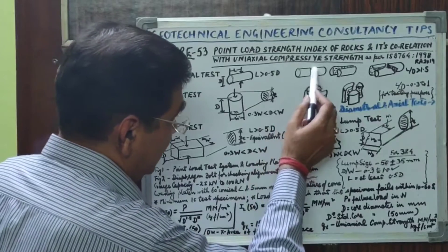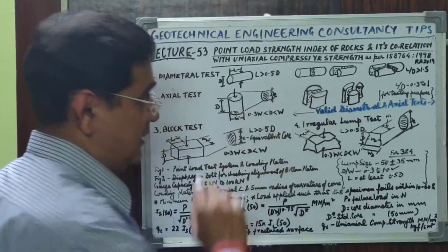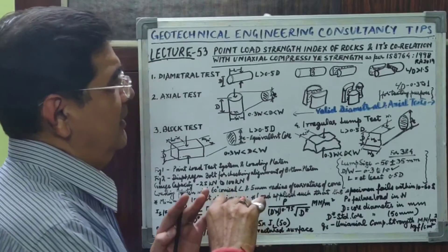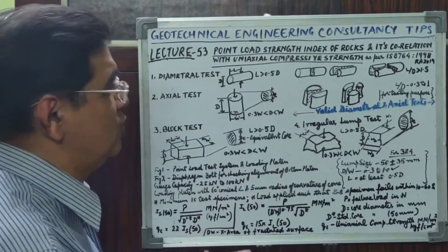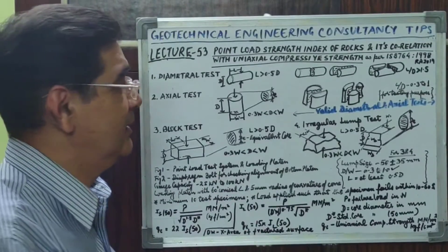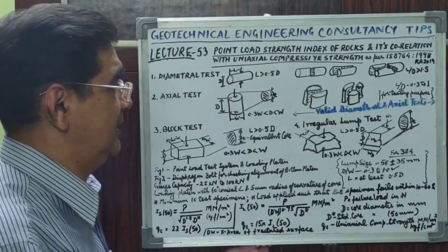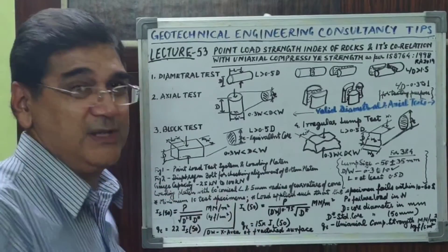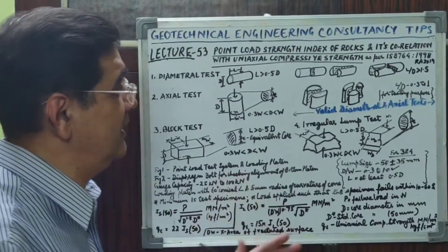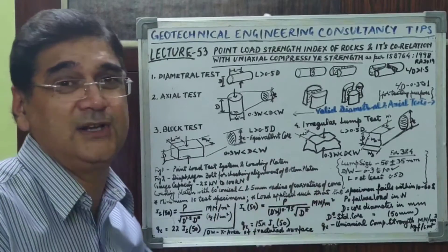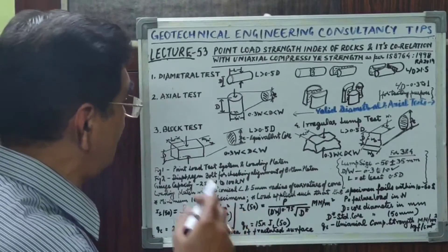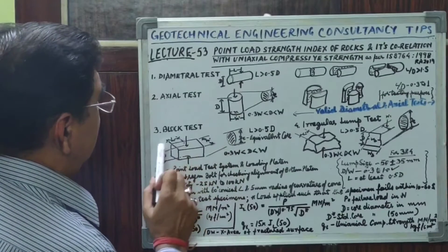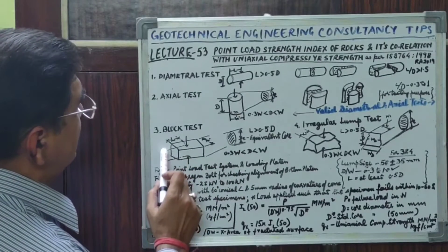If the sample breaks in between in a large zigzag way or a piece breaks off in an irregular manner, we declare it an invalid test. We must test at least 10 test specimens and delete any invalid tests from the set.